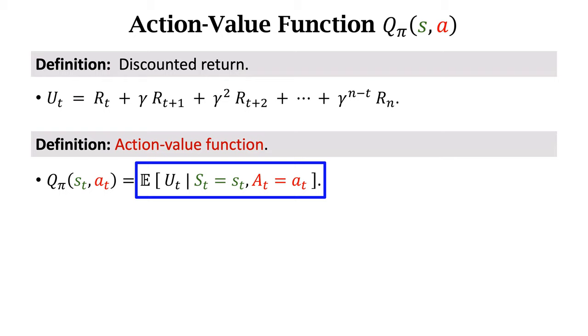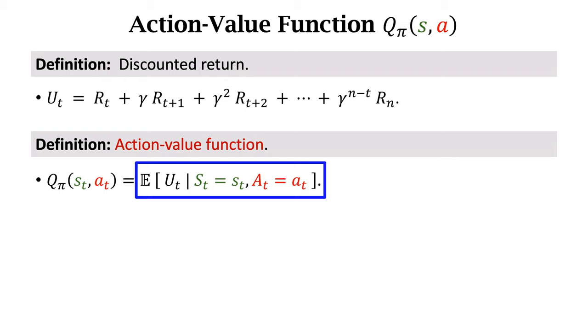The solution is to take the expectation of UT. By integrating out the randomness in UT, we will obtain a real number that reflects how good the current situation is.